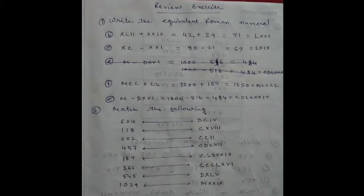Number 2, match the following: 604, 118, 202, 457, 189, 366, 545, 1029. 604 means DCIV. 118 means CXVIII. 202 is CCII. 457 means CDLVII.